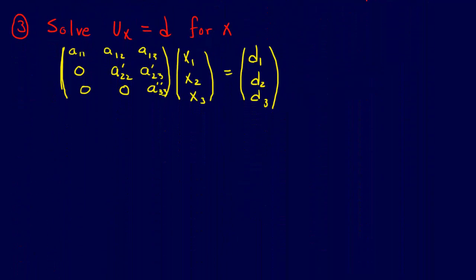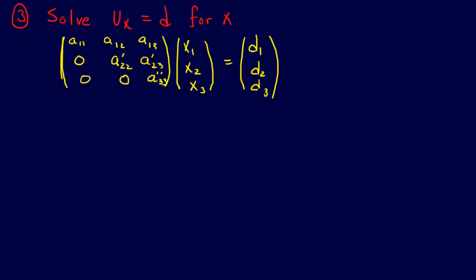Solve UX equals D for X. So this is U, and I just put it in the same form that we've seen it before, and this is X, and this is D. We just figured out D in the previous step, and we figured this out in the first step, so now we can just do this.